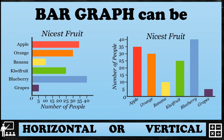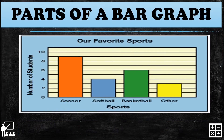A bar graph can be classified into two types: horizontal or vertical. In a horizontal bar graph, the data are drawn horizontally, while in a vertical bar graph, the data are drawn vertically. In this sample bar graph, it is a vertical bar graph because the data are drawn vertically.